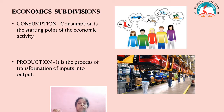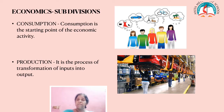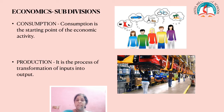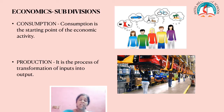Production is the transformation of input into output. The inputs are all the raw materials and everything, and when we produce the product we get the output. That process is known as production. To produce the product, we need certain factors of production: land, labor, capital, and organization. We need a place, laborers, capital, and an organization. With these factors of production, we produce the product — we convert the input into output — and that process is known as production.